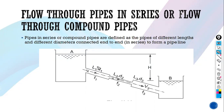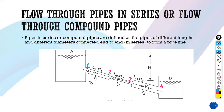Let's count the minor losses. The first head loss is at the entrance of the pipe. The second is head loss due to contraction of diameter — you can see in the diagram that the diameter is getting contracted. The third is due to sudden enlargement. The fourth is head loss at the exit of the pipe. These four are the minor losses, and there are also respective major losses in pipe one, pipe two, and pipe three.